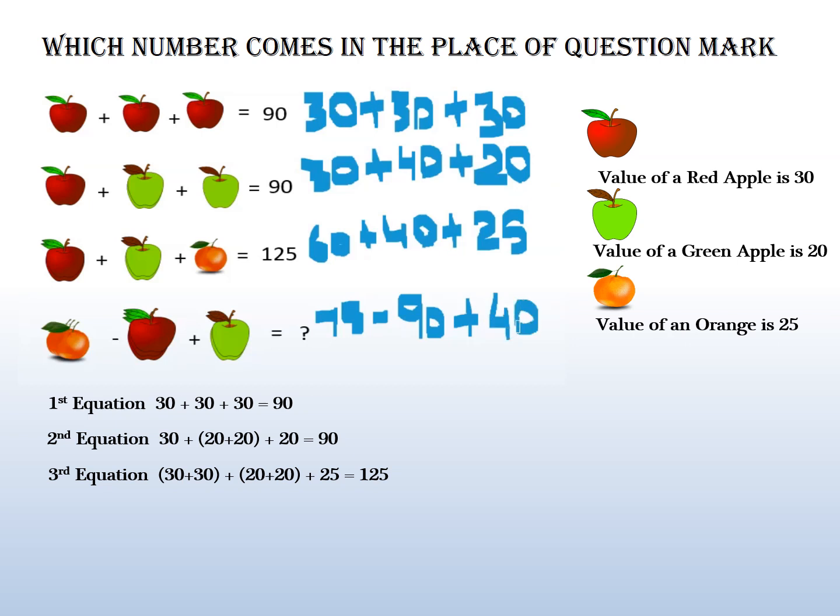And here we have to do first the addition: 75 plus 40 is 115, then do the subtraction minus 90. So 115 minus 90 gives you 25.